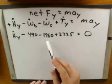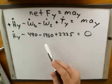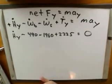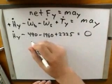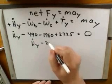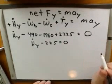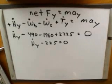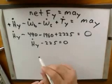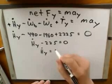Now we have an equation in one unknown, so we can use algebra to solve. We do the calculations: negative 490 minus 1960 plus 2225, and we end up with the magnitude of HY minus 225 equals 0. Rearranging, we get that the magnitude of HY equals 225.